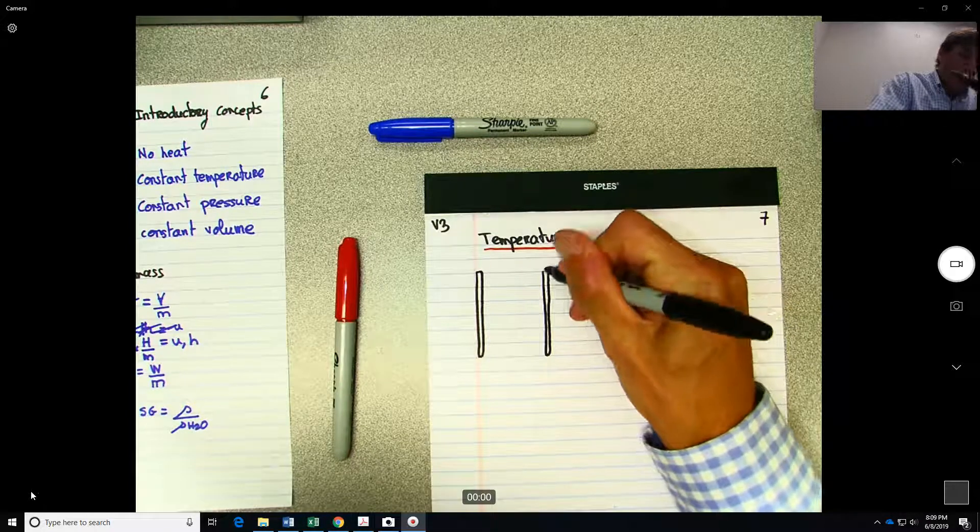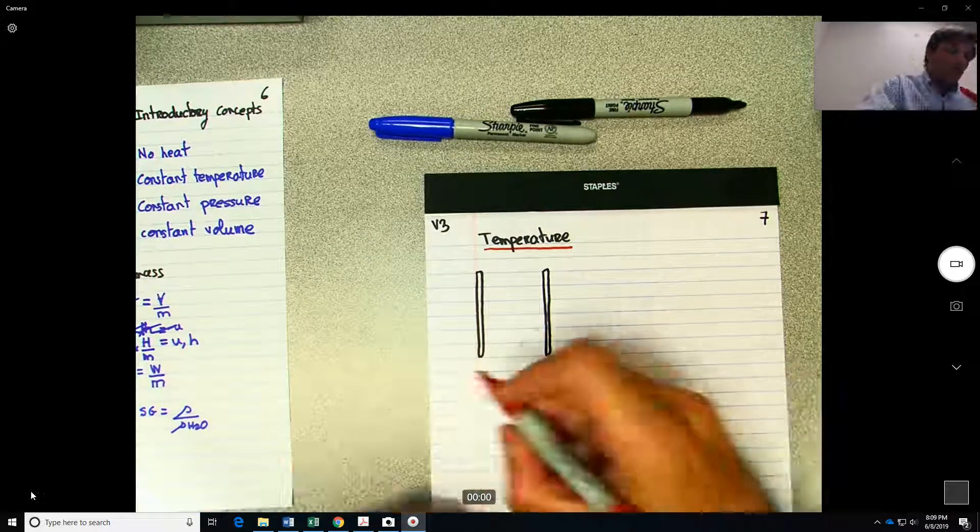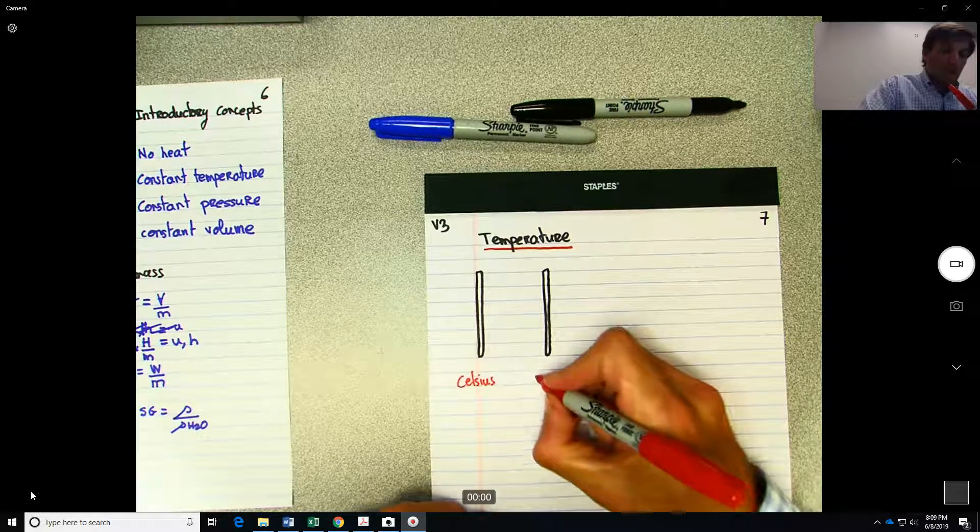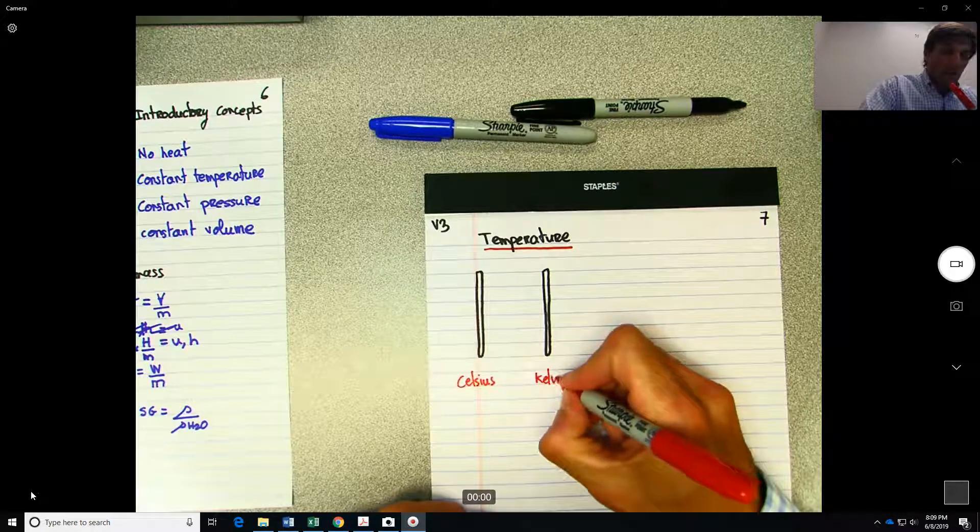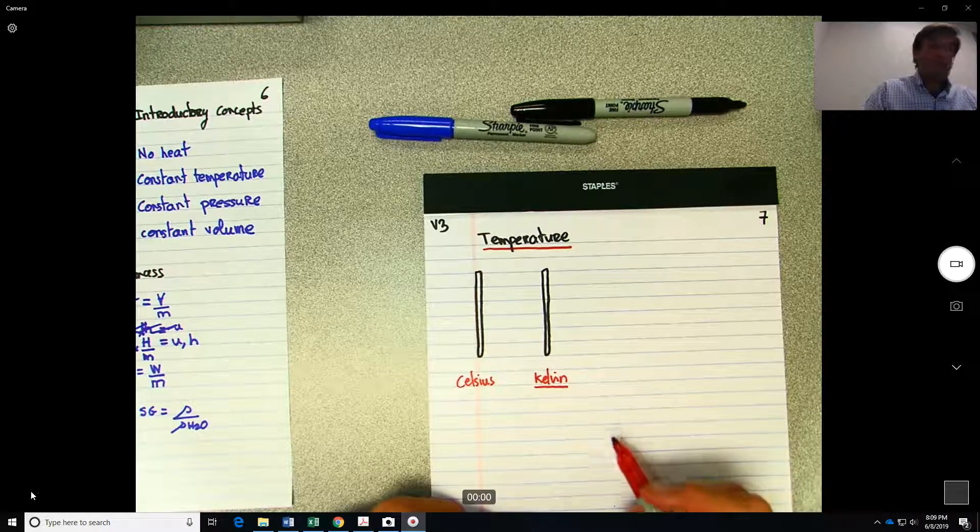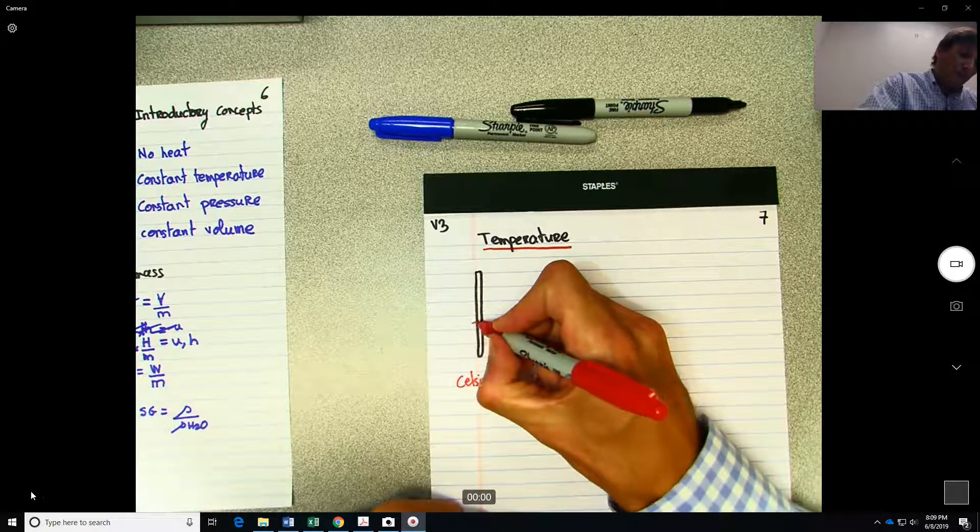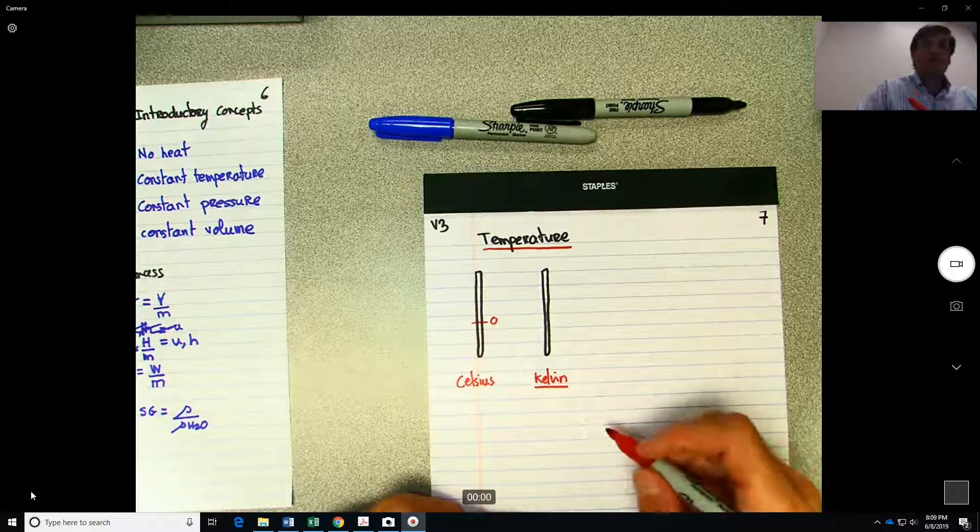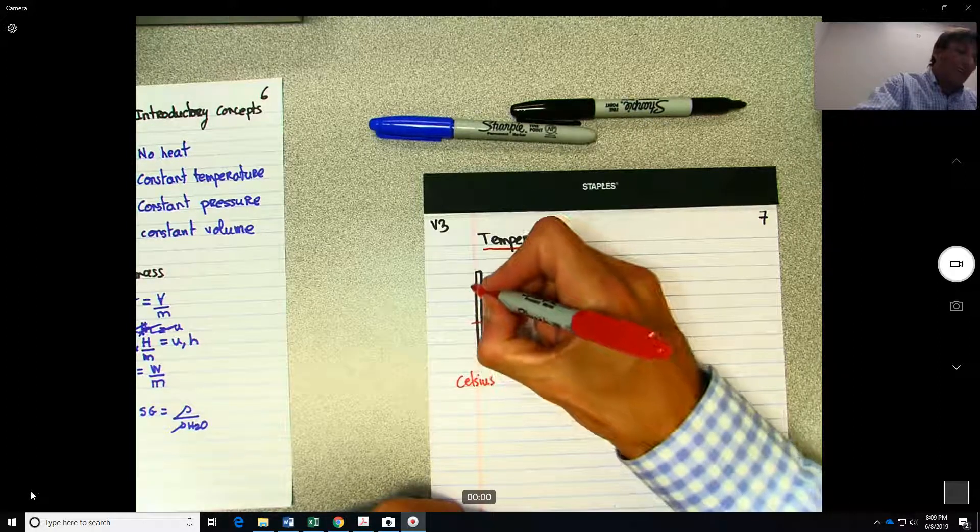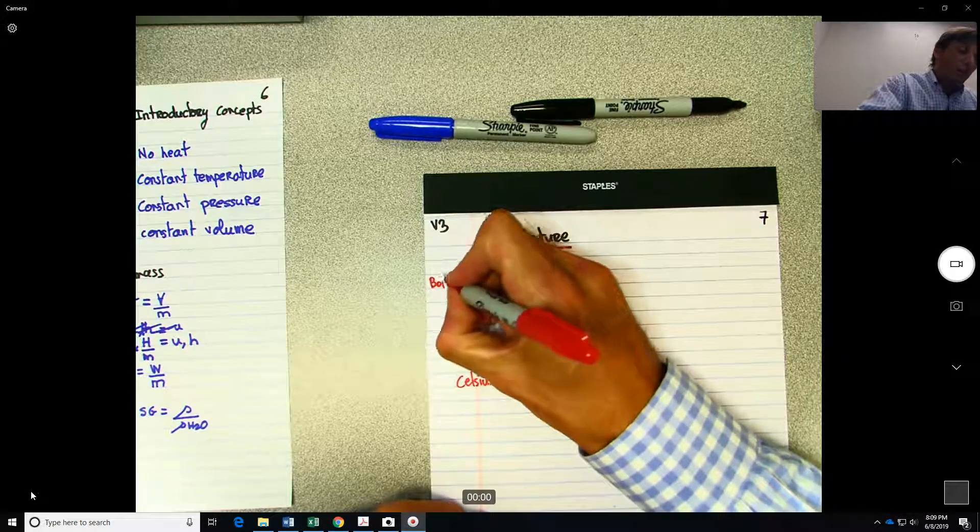If we first start by the metric system, we know that the Celsius system and the Kelvin. So generally this is the one used for metric, but this is the most common. So the Celsius system was based on what? I think most of you know that. Zero will be the temperature of the freezing, will be the freezing temperature of pure water. And 100 will be the boiling temperature of pure water.